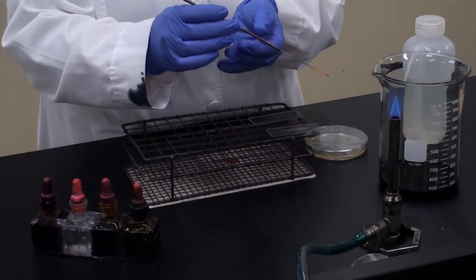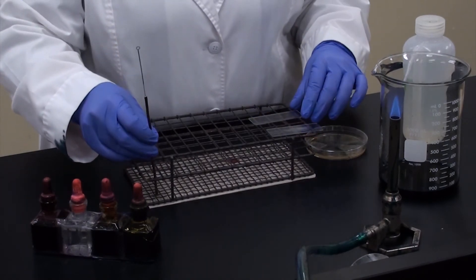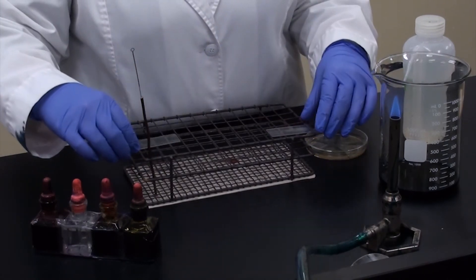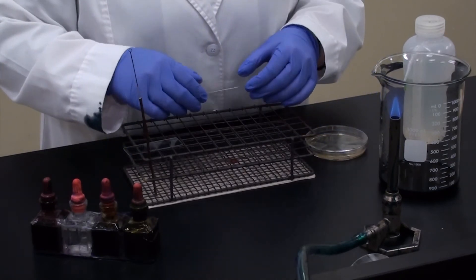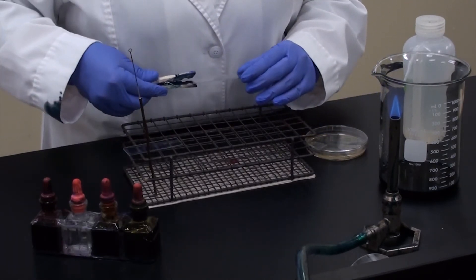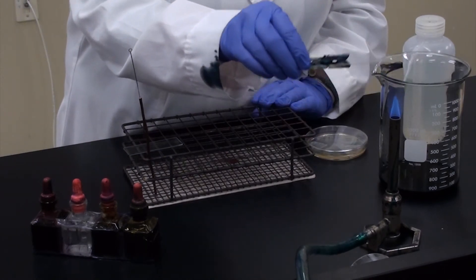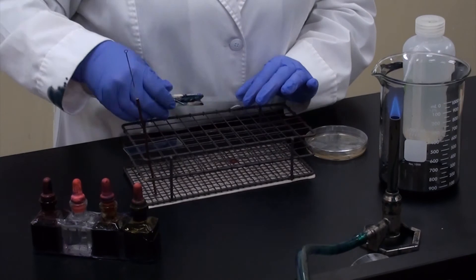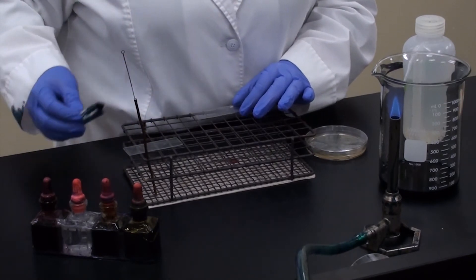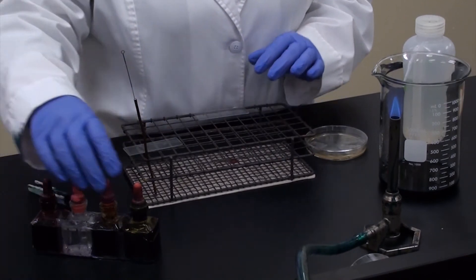I'm going to set my loop to the side. Now I've already prepared a slide and let it air dry. So now I'm going to heat fix it, flicking it just very gently and quickly across the flame to kill the bacteria and adhere them to the slide. And I'm going to go ahead and give it its first stain.